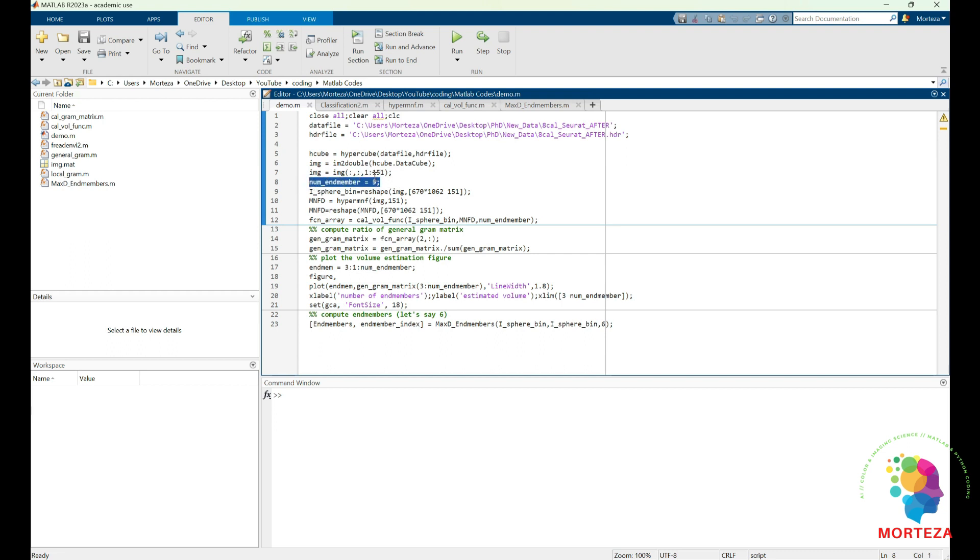And then here, let's say I don't know the number of endmembers. I've already run this program and I know there are nine endmembers, but let's say I don't know that. So I'm going to just put ten here. But by using a graph that is generated by this program, you're going to see how to specify the number of endmembers.